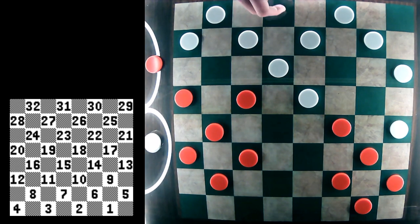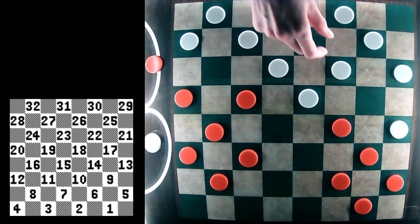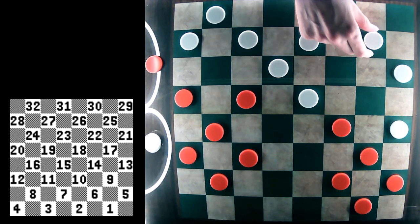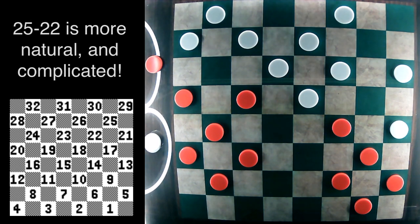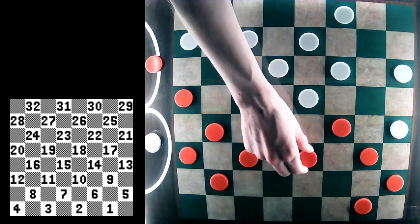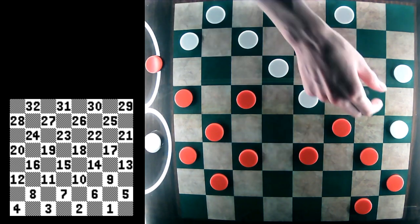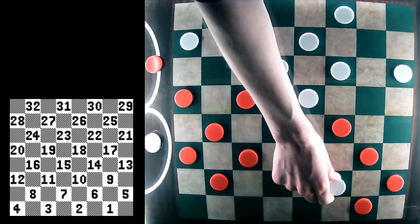So instead of the 26-22 move which I showed, maybe 25-22 is a bit more natural. And there's a lot of fun and tricky play here. So after 25-22, red must go 6-10, allowing white to capture the piece on 9.